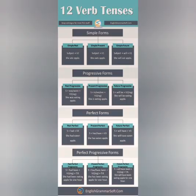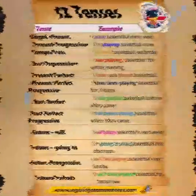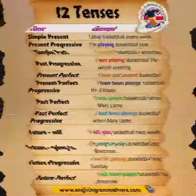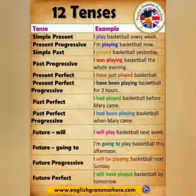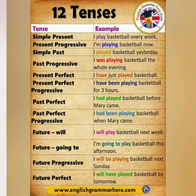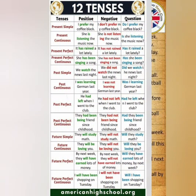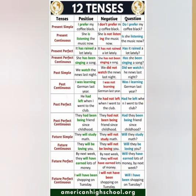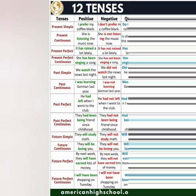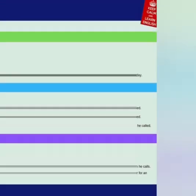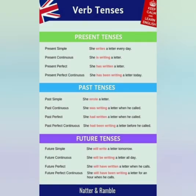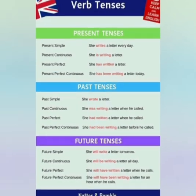Present tense is that form of verb which speaks of the action which is currently going on at the moment or being performed continuously. There are four types of present tense: simple present, present continuous or present progressive, present perfect tense, and present perfect continuous tense.